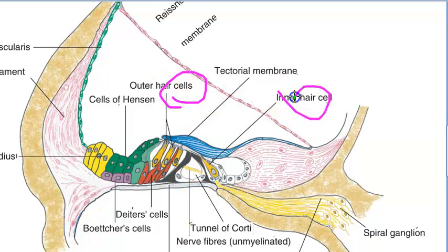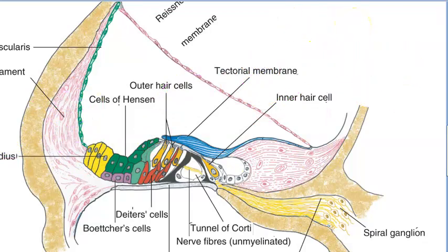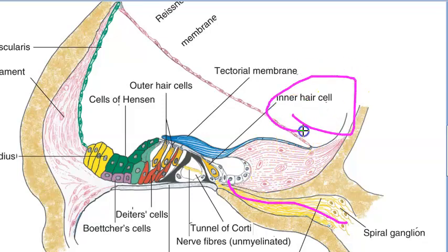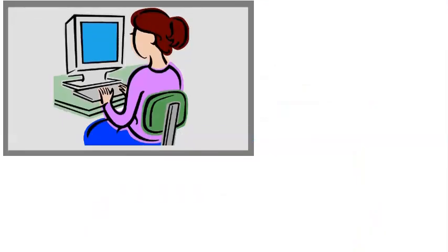The hair cells are the important receptor cells. When sound energy comes, the hair cells convert it into electrical energy which is sent to the nerves. The inner hair cells are supplied by a lot of afferent cochlear fibers — they are more important for transmission of auditory impulses. The outer hair cells receive efferent innervation from the olivary complex and are concerned more with modulating the function of the inner hair cells.